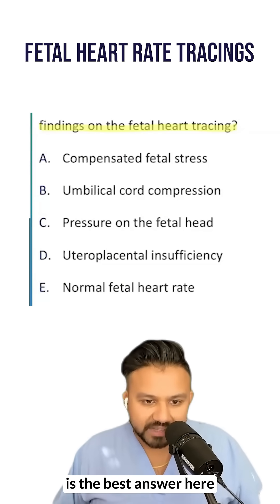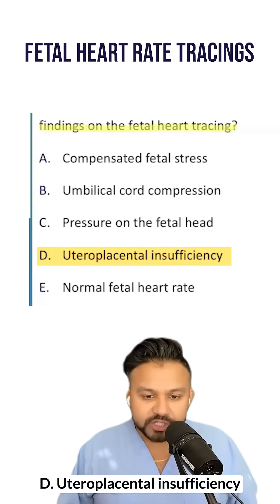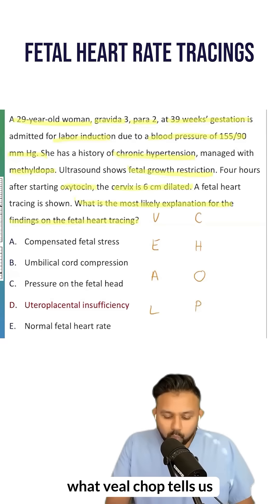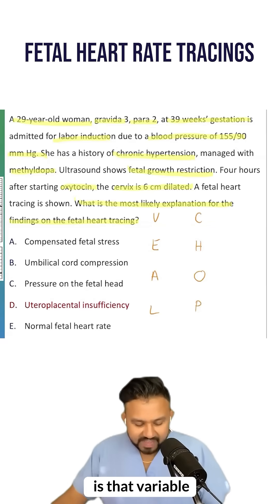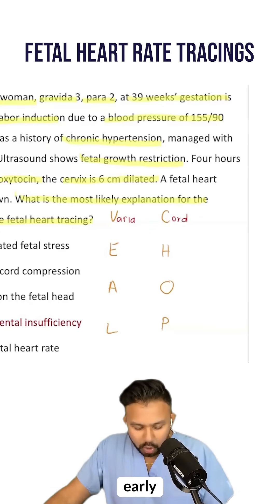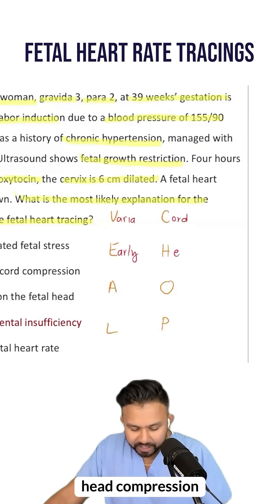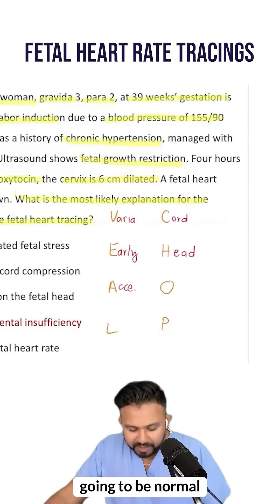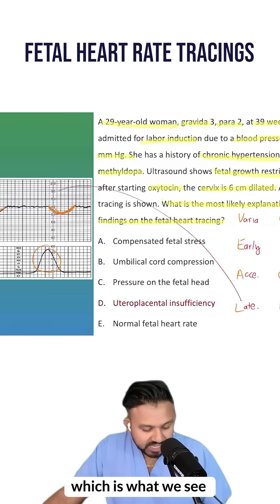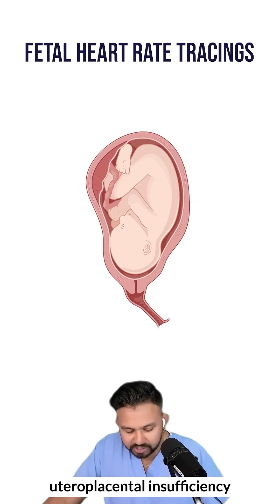If you are saying D, uteroplacental insufficiency, you are absolutely correct. Remember, there is a mnemonic — VEAL CHOP. Variable decelerations are due to cord compression, early decelerations are due to head compression, accelerations are normal, and late decelerations, which is what we see in this question, are due to uteroplacental insufficiency.